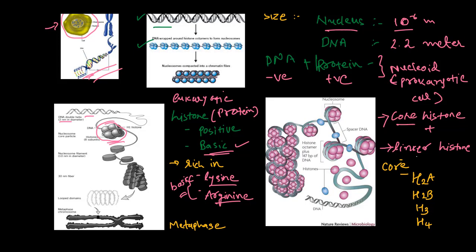There are four types of core histones: H2A, H2B, H3, and H4. These core histones make the octamer of histone protein. Each core histone contains two subunits — two H2A, two H2B, two H3, and two H4 — so the four types of histones make an octamer of eight. You can see in this figure the octamer, and the DNA that is wrapped around this histone protein.